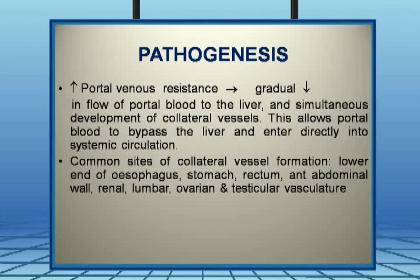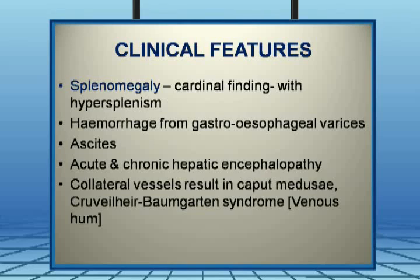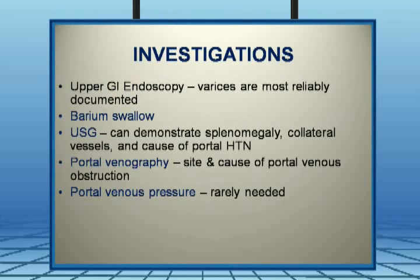The hallmark of portal hypertension is splenomegaly, also called the cardinal manifestation. It causes not only structural enlargement but also functional abnormality — hypersplenism — and bleeding from gastroesophageal varices, ascites, acute and chronic hepatic encephalopathy. Collateral vessels result in caput medusae, and a rare syndrome called Cruveilhier-Baumgarten syndrome — a venous hum auscultated over dilated tortuous veins on the anterior abdominal wall.